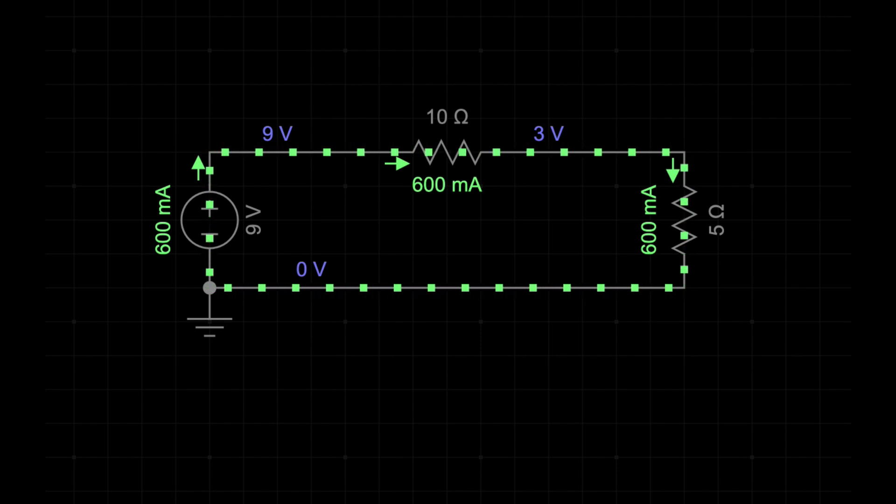In practice, we won't be using a 10 ohm resistor. The current flowing through the circuit is 600 milliamps. For most resistors, this current is too high. Excessive current passing through a resistor can cause it to overheat and potentially catch fire. To avoid damaging the circuit, we need to reduce the current.